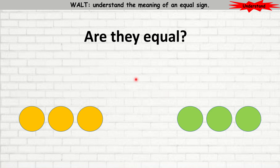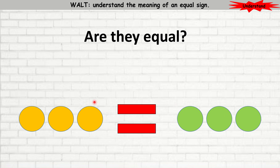Are they equal? Here I have 3 orange circles, and on the right-hand side I have 3 green circles. Are they equal? Yes, they are equal. The amount on the left-hand side is equal to the amount on the right-hand side. So, 3 is equal to 3.